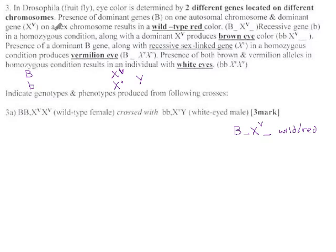Recessive gene in homozygous condition, so little b little b along with X big V, produces brown eyes. And apparently it doesn't matter what that other one is—it gives you a brown eyed fruit fly.